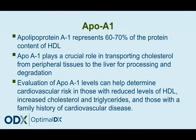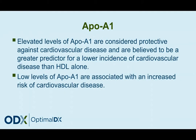ApoA1 represents about 60% to 70% of the protein content of HDL, and it plays a crucial role in transporting cholesterol from peripheral tissues to the liver for processing and degradation. Evaluating ApoA1 can help determine cardiovascular risk in those with reduced levels of HDL, increased total cholesterol, increased triglyceride levels, and those with a family history of cardiovascular disease. Elevated levels are considered protective against cardiovascular disease and are believed to be a greater predictor for a lower incidence of cardiovascular disease than HDL alone.